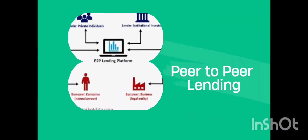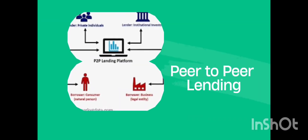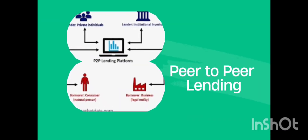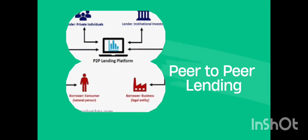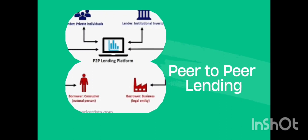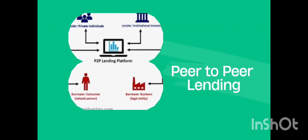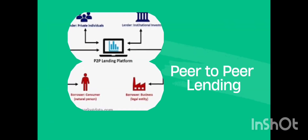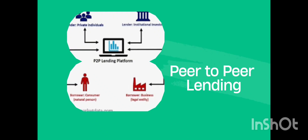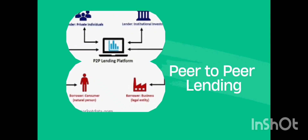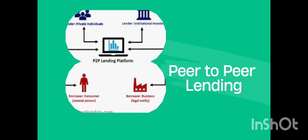Three: peer-to-peer lending. Platforms such as Lending Club or Prosper allow you to lend money to individuals or small businesses. You earn interest on the loans made and receive regular payments.